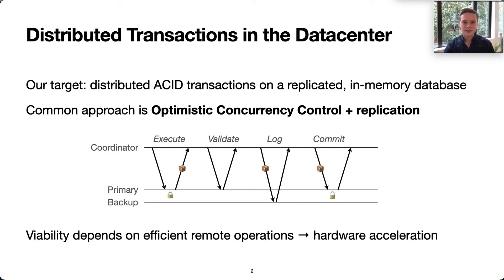Our work targets distributed ACID transactions in the data center. Transactions are a powerful programming model, but traditionally have been expensive to implement. A line of recent work has focused on data center or rack-scale transactions on a replicated in-memory database. A common approach is optimistic concurrency control with primary-backup replication. The OCC protocol consists of a series of operations performed by the coordinator on database shards.